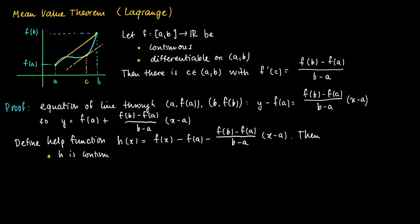What do we know about this function h? First, it is continuous because f(x) is continuous and the linear function is also continuous, so h is continuous on the interval [a, b]. Moreover, h is just as differentiable as f, since the linear part is differentiable on the whole open interval (a, b), so the difference h is also differentiable on the open interval (a, b).